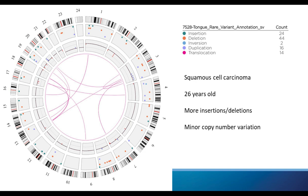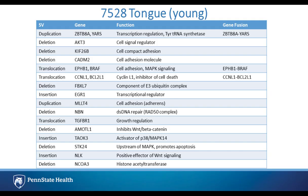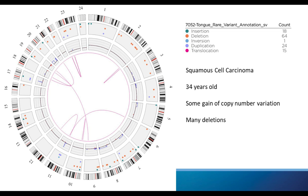Moving on to some of the younger tongue cancer patients — this is a squamous cell carcinoma tongue of a 26-year-old. We can see they have quite a bit more insertions and deletions, particularly deletions compared to the two previous elderly cases, and moderate copy number variation. This patient has a large variety of structural variants: a deletion in AKT3 — a cell signal regulator; a translocation involving BRAF involved in RAS/kinase signaling resulting in a gene fusion; a translocation involving BCL2-L1 involved in apoptosis; an insertion in TAK3 which is an activator of MAP kinase; a deletion in STK24 involved in the MAP kinase pathway; and an insertion in NLK involved in Wnt signaling.